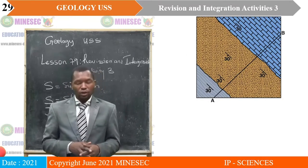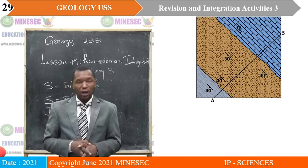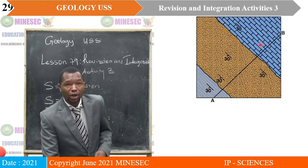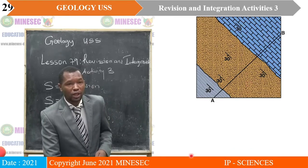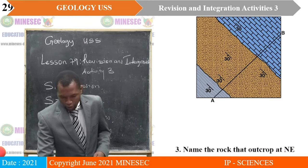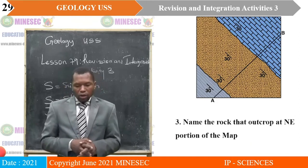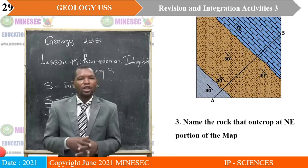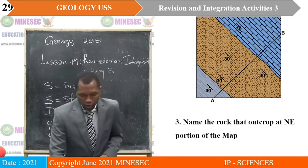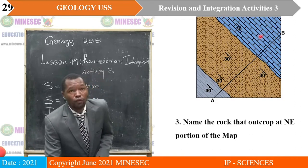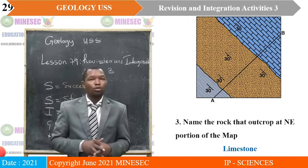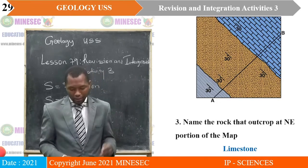Observe this map with different elements — a line of section and different rock types represented with their symbols. Question: Name the rock that outcrops at the northeast portion of the map. Looking at that symbol, it is a symbol for limestone. So the rock cropping there is limestone.